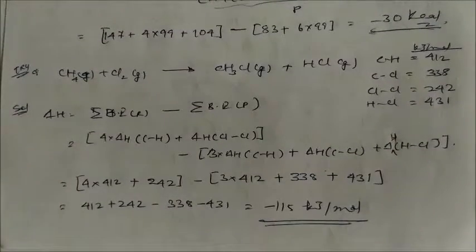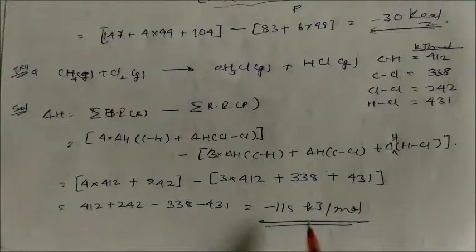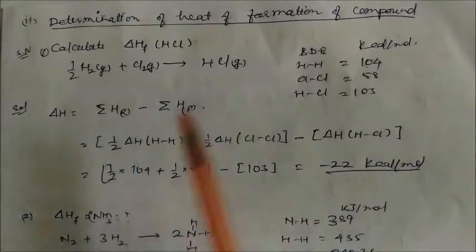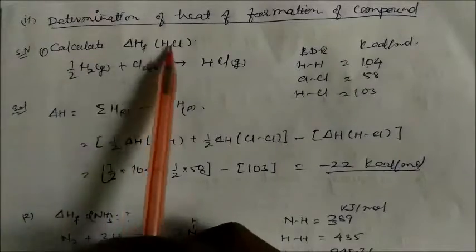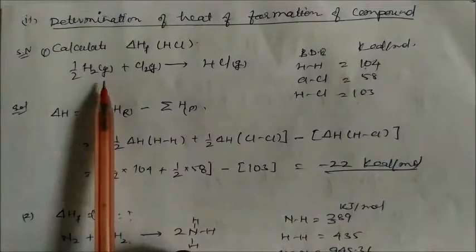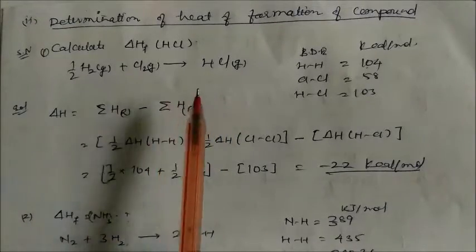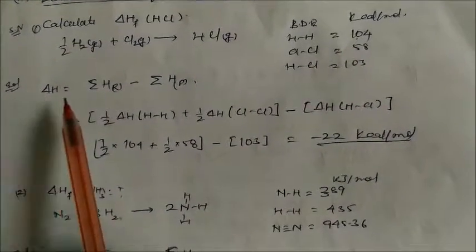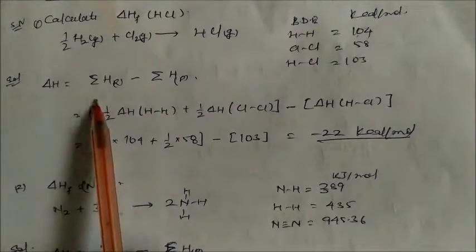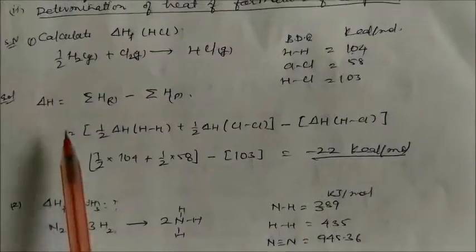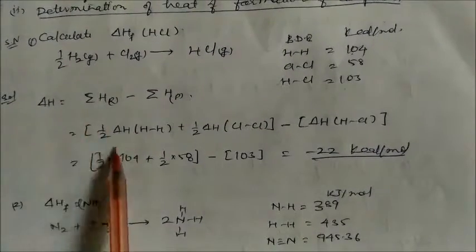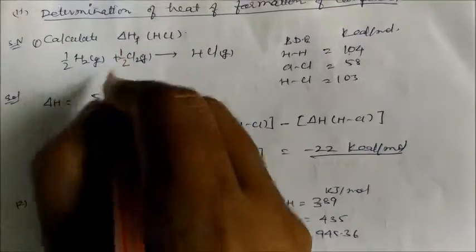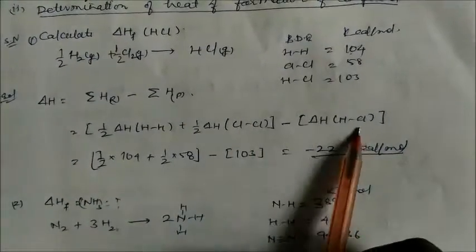Substituting the values and solving gives ΔH = −115 kJ/mol. For heat of formation of HCl: ½H₂(g) + ½Cl₂(g) → HCl(g). The formula gives ΔH = ½ × bond enthalpy of H–H + ½ × bond enthalpy of Cl–Cl minus bond enthalpy of H–Cl. Substituting gives the heat of formation of HCl.